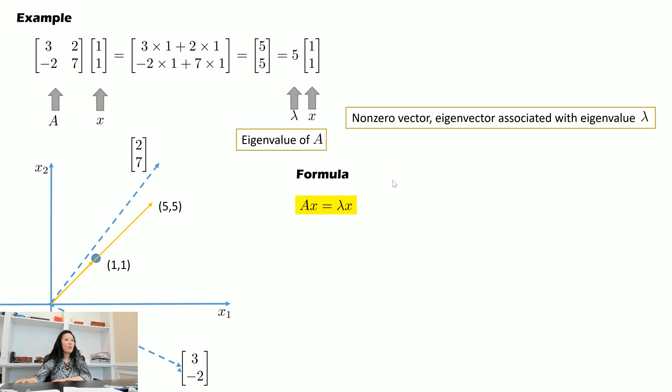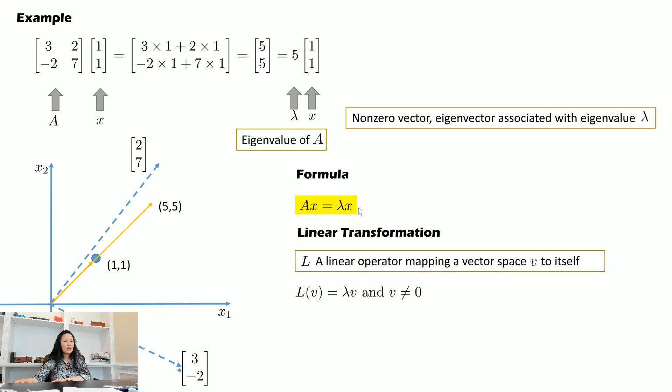In formula expression, we have matrix A multiplied by eigenvector x equal to eigenvalue λ multiplied by eigenvector x. So now when people talk to you about linear transformations, you should immediately think about eigenvalues and eigenvectors. Let's call L the linear operator mapping a vector space V to itself. We express L(v) = λv. So we can think of the operations on these vectors as multiplication by a matrix A.